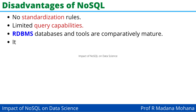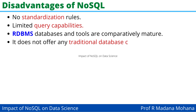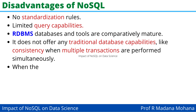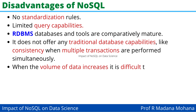Relational DBMS databases and tools are comparatively mature compared to NoSQL. It doesn't offer traditional database capabilities like consistency when multiple transactions are performed simultaneously. When the volume of data increases, it is difficult to maintain unique values as keys.